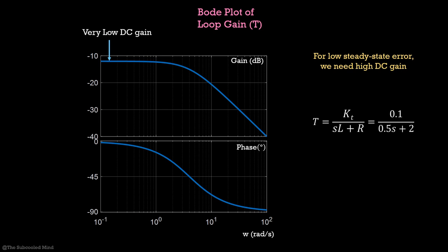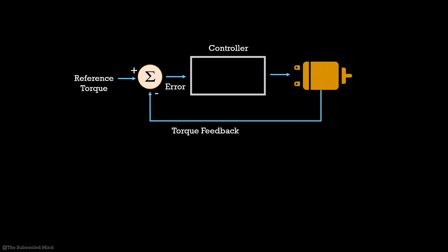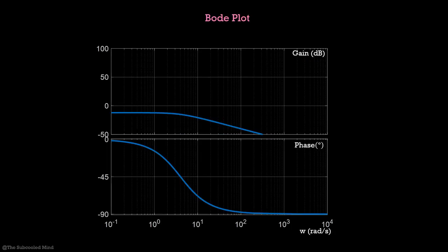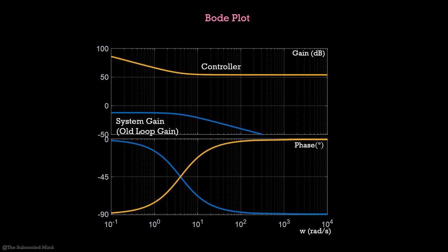How do we overcome this problem? We design a controller and add it to our closed loop control. Controller is nothing but a combination of poles and zeros that will shape our loop gain. Consider the transfer function of a controller to be this. Now, the loop gain is a product of system transfer function and this controller. In other words, we have manipulated the loop gain. Let us take out the bode plot of this new loop gain. This was the plot of the old loop gain. This is the plot of the controller we used and this is the new loop gain. This time, we can see that the loop gain satisfies all the requirements.